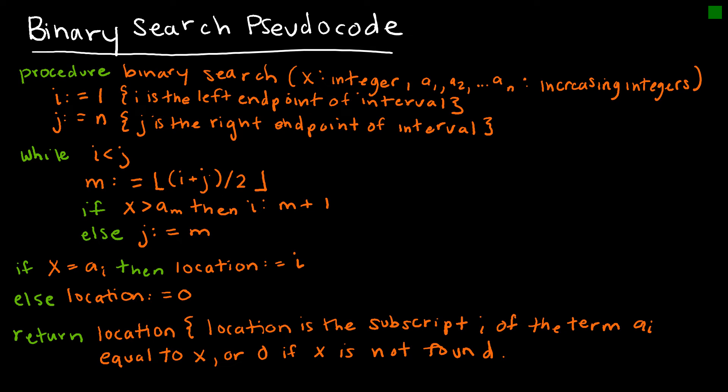Let's take a look at the pseudocode for that binary search algorithm. The procedure we're calling binary search. We're saying that we're trying to find x in a list of integers ordered from a1 through an that are increasing integers. We're saying that i is going to represent the left endpoint of the interval, and it's going to start at 1, because 1, when we start, is the left endpoint for sure. j is going to start at n, and that's going to always be the right endpoint of our interval.